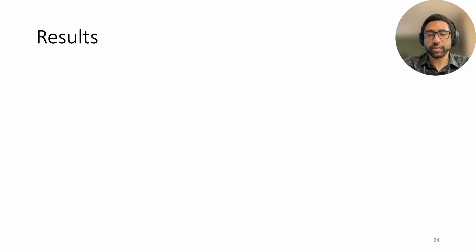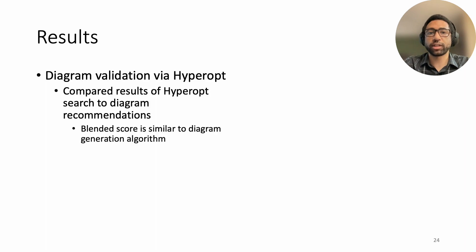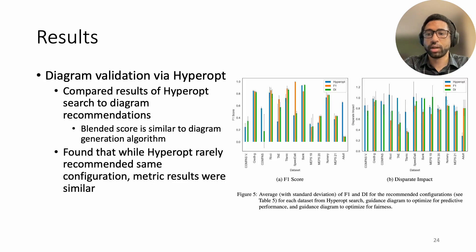We next validate our guidance diagram with the results of our automated hyperopt search. Specifically, we compared the hyperopt results to the diagram's recommendations, which was a valid comparison because the blended score optimization functioned similarly to the diagram generation algorithm. We found that while hyperopt rarely recommended the same configuration, the fairness and predictive performance metrics were similar.